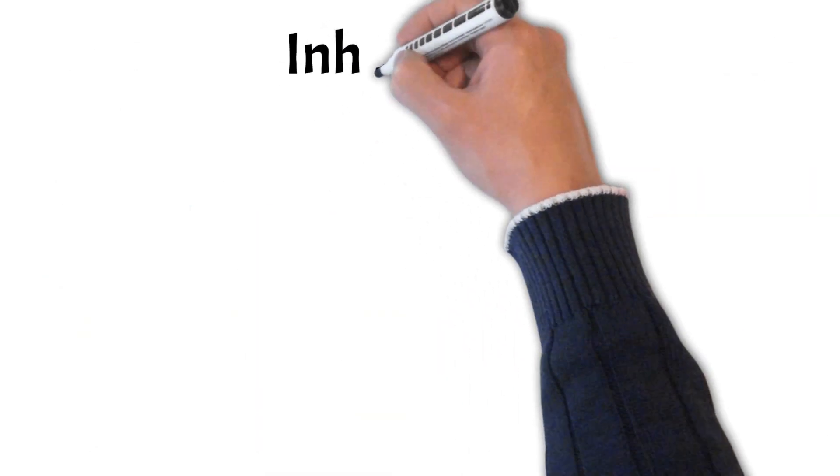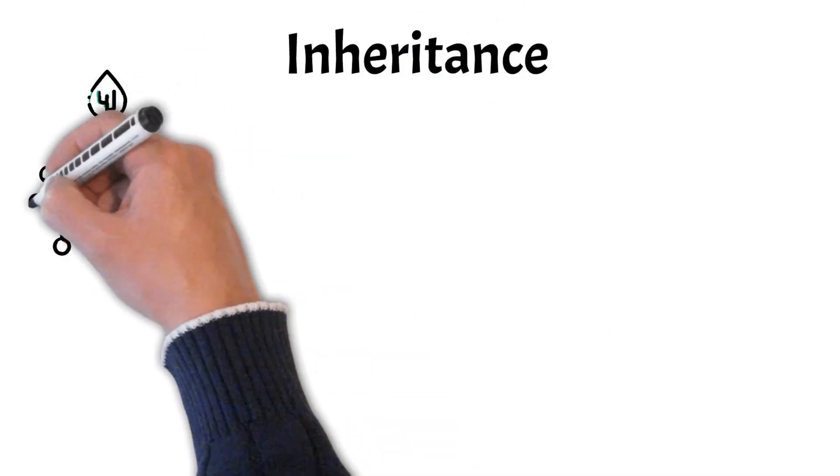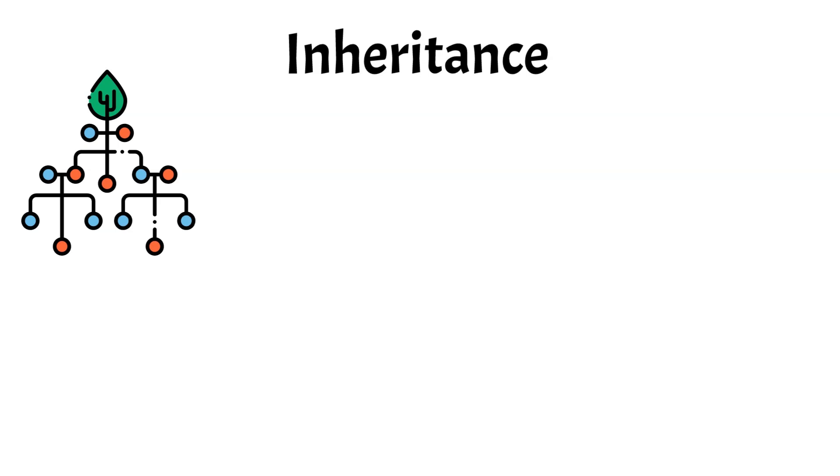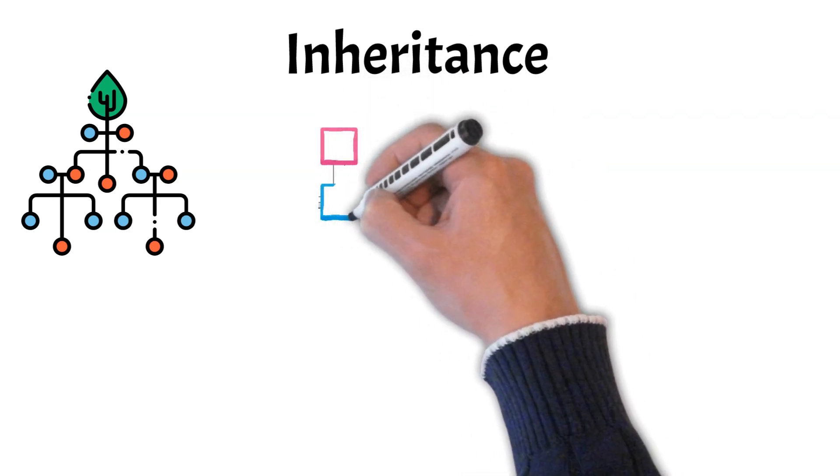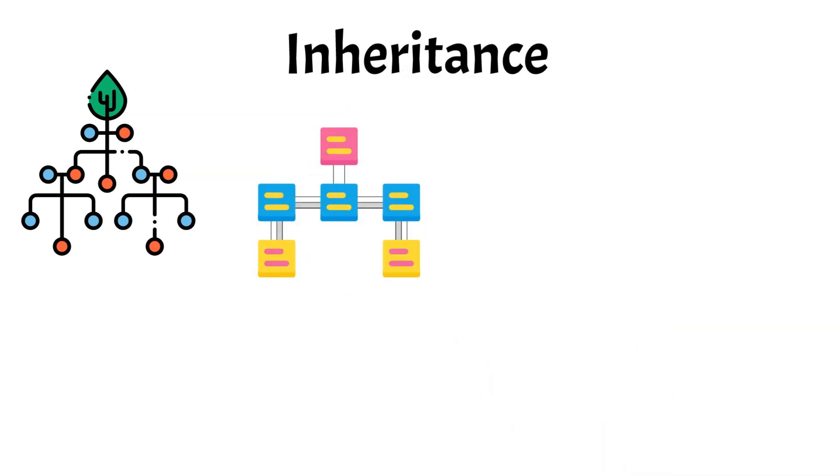Up next, we have inheritance. Inheritance is a powerful concept that allows one class to inherit the properties and methods of another class. It establishes a hierarchical relationship between classes where one class, called the child or subclass, can inherit behaviors and characteristics from another class, called the parent or superclass.